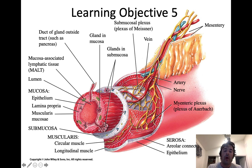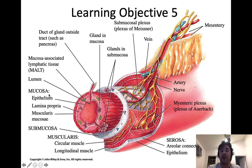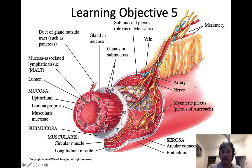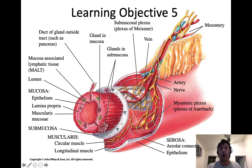Where you see the overwhelming majority of difference between one segment of the GI tract and another — especially at the histological level — is in the mucosa. What distinguishes the esophagus from the stomach, from the small intestines, from the large intestines — where you see the biggest difference under the microscope — is within the mucosa. We're going to spend a lot of time talking about the mucosa because it's what actually interacts with material in the GI tract, and this is where you start to see a lot of the change from one segment to the next.